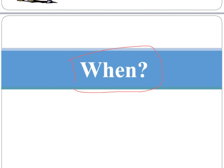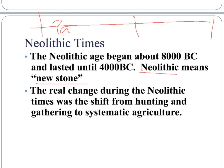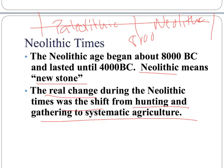When? Neolithic times were between 8,000 BC and lasted until 4,000 BC. Paleolithic meant 'old stone' and Neolithic means 'new stone.' On a timeline, you have the Paleolithic, then at 8,000 BC we have the Neolithic. The real change was the shift from hunting and gathering to systematic agriculture.